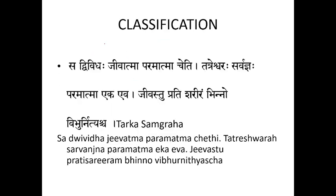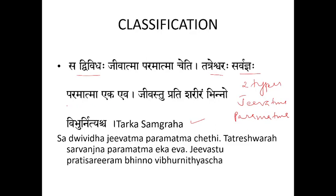Coming to the classification of Atma. Again in Tarkasangraha, it is classified into two: Jivatma and Paramatma — Sardvitaha Jivatma Paramatma Cheti. Paramatma is only one in number. It is called Ishwara, and it is Sarvatma — omnipresent, present everywhere.